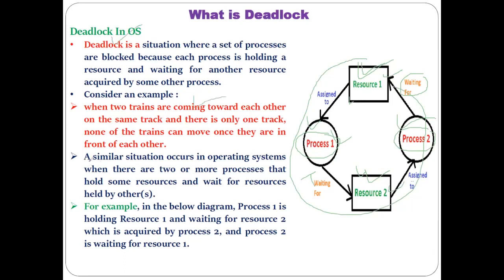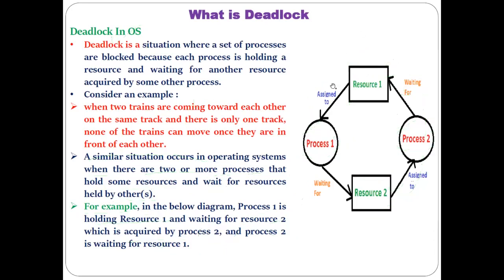Like the train example, a similar situation occurs in the OS when two or more processes hold some resources and wait for resources held by other processes. In the diagram, Process P1 is holding Resource R1 and waiting for Resource R2, which is held by Process P2, while P2 is waiting for R1. Both must wait indefinitely because neither is ready to release their already acquired resources.